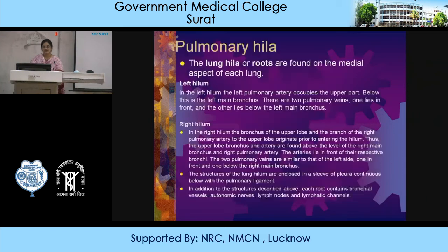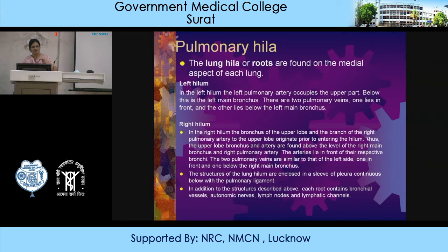The lung hilum or roots are found on the medial aspect of each lung. In the left hilum, the left pulmonary artery occupies the upper part; below it is the left main bronchus; there are two pulmonary veins, one in front and one below the left main bronchus. In the right hilum, the bronchus and artery of the upper lobe originate prior to entering the hilum, so the upper lobe bronchus and artery are found above the level of the right main bronchus and right pulmonary artery. The structures of the lung hilum are encased in a sleeve of pleura continuous below with the pulmonary ligament, and also include bronchial vessels, autonomic nerves, lymph nodes, and lymphatic channels.